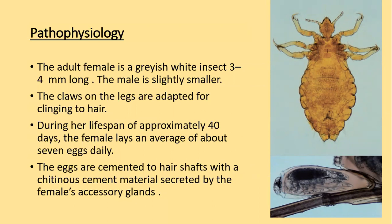Regarding pathophysiology: adult female lice are grayish-white in color, three to four millimeters long, and males are slightly smaller — a size that can be easily visible. The lice have three pairs of legs, and there are claws on the legs that are adapted for clinching the hairs.